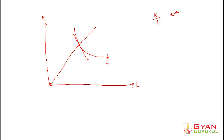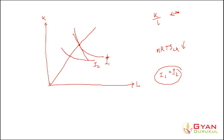As technical progress takes place, it increases the marginal productivity of capital more than labor, so the MRTS LK falls — meaning the slope of the isoquant falls. Taking a new point, I draw a new isoquant I2 through this point. Both I1 and I2 represent the same level of output. At this new point, if I find the MRTS, I draw the tangent line here.